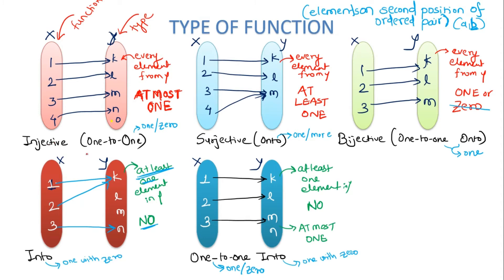The first type is the injective or one-to-one function. In an injective function, each element on the second set side receives at most one incoming arrow — meaning each element receives either zero or one incoming arrow. The next type is the surjective or onto function, where each element on the second set side receives at least one incoming arrow — meaning each element receives one or more incoming arrows.